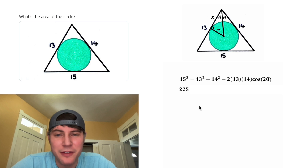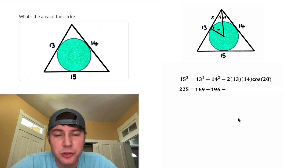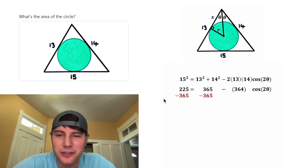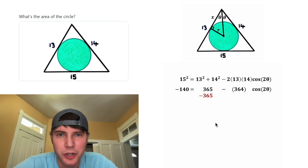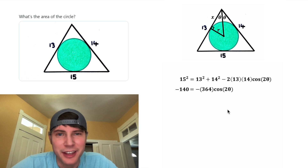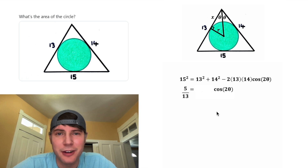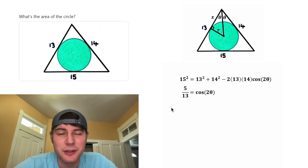15 squared is 225, 13 squared is 169, 14 squared is 196. We subtract two times 13 times 14, which is 364, times cosine two theta. 169 plus 196 is 365. We subtract 365 from both sides: 225 minus 365 is negative 140, and the 365s cancel on the right. Then dividing both sides by negative 364, negative 140 over negative 364 equals 5/13. So cosine of two theta is equal to 5/13.